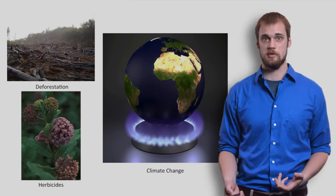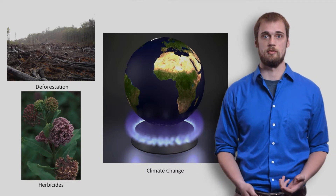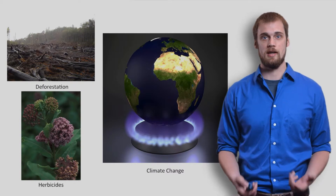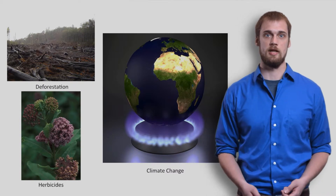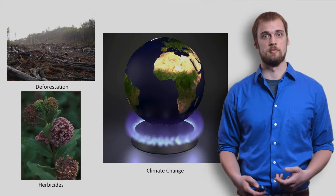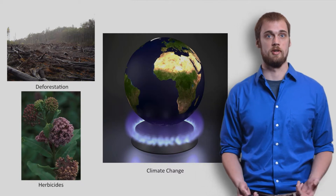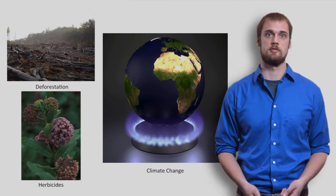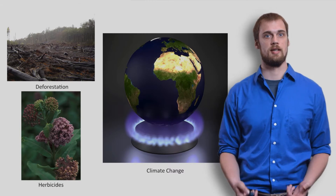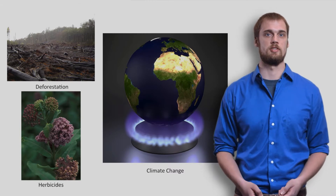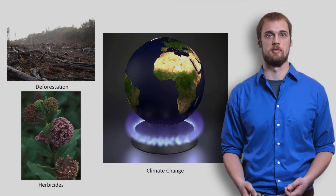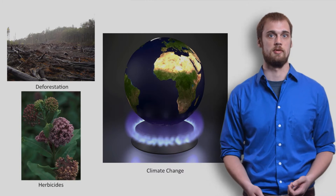These include deforestation of their overwintering grounds in the mountains of Mexico, the eradication of milkweed plants in the U.S. through the use of herbicides, as well as climate change. Therefore, if we want our children to be able to experience these incredible animals, it is time to start making a change in our emissions, logging, and farming practices to preserve monarchs for generations to come.